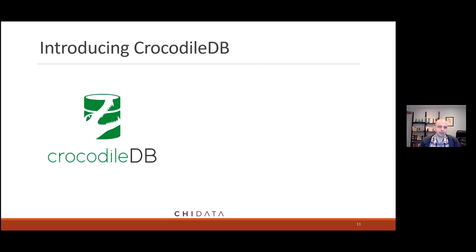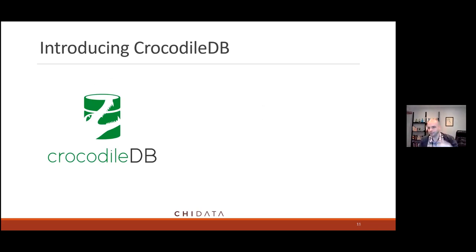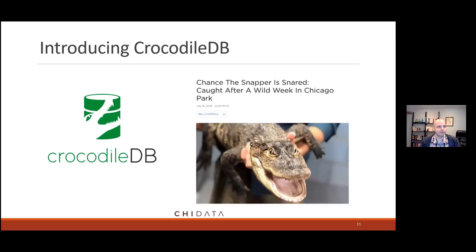This is CrocodileDB, the system we've been building. The inspiration in part was thinking about National Geographic specials where you watch a crocodile hunting — it lays in the water, doesn't do a lot, waits until something gets close and then moves fast and goes for it. So our joke is it's a fast animal that looks lazy a lot. Before COVID, we even had a snapper running around Chicago, which has worse weather than Amsterdam.